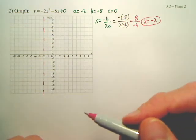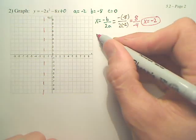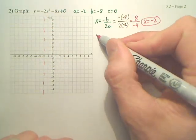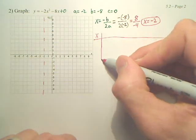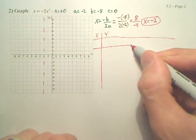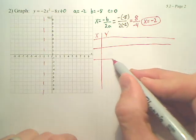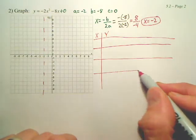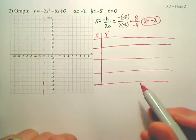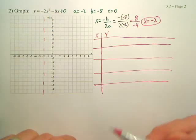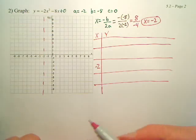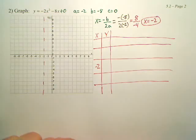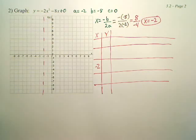Now to create your parabola around that, we need to make a table. Negative 2 is the middle of your table.